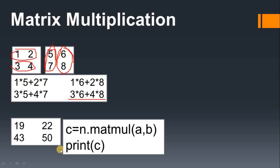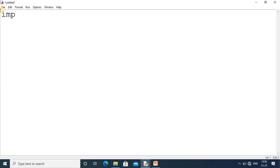The code you need to write is `c = np.matmul(a, b)` — you use the `matmul` method for actual matrix multiplication, and it will provide the correct answer. Now for implementing this code practically, we will go into the editor.